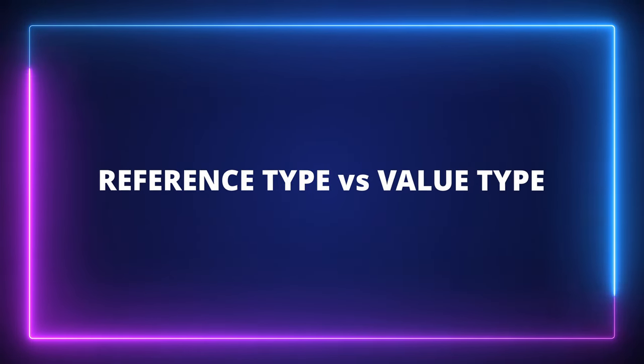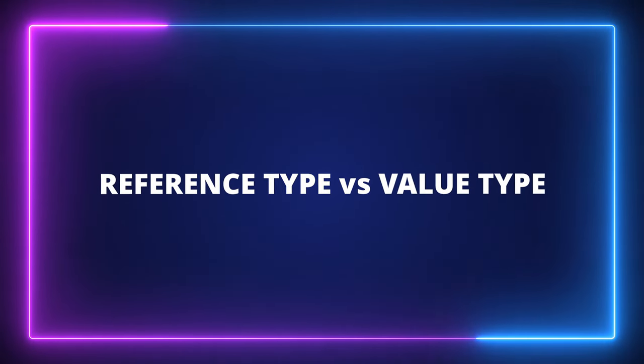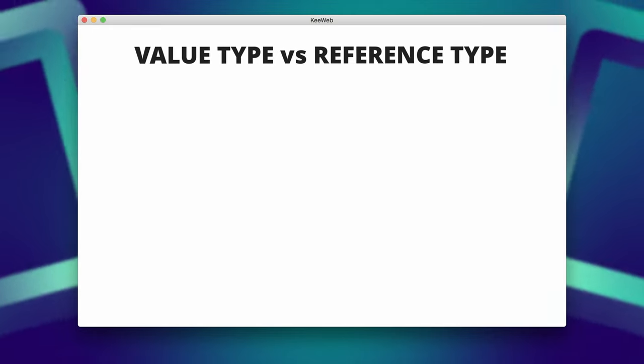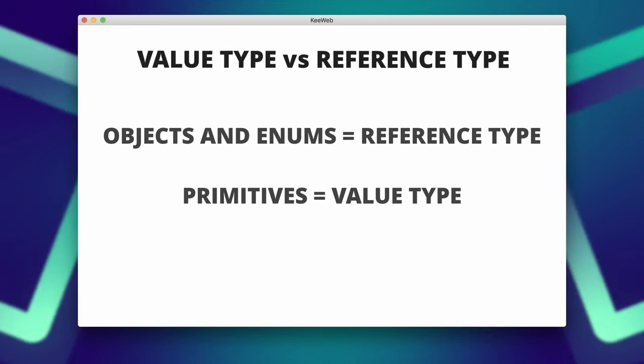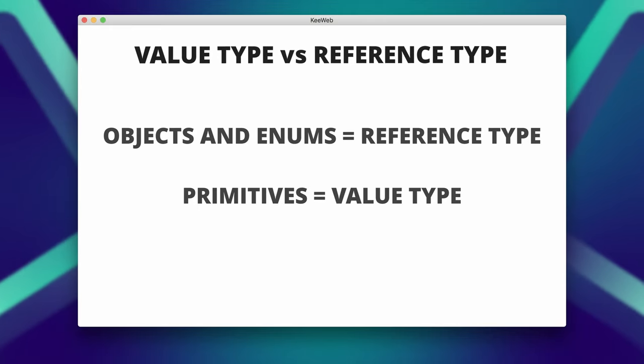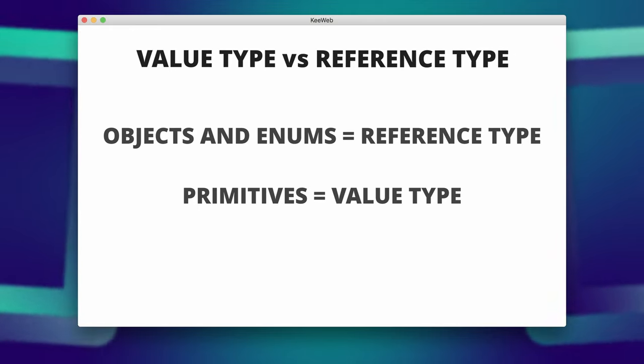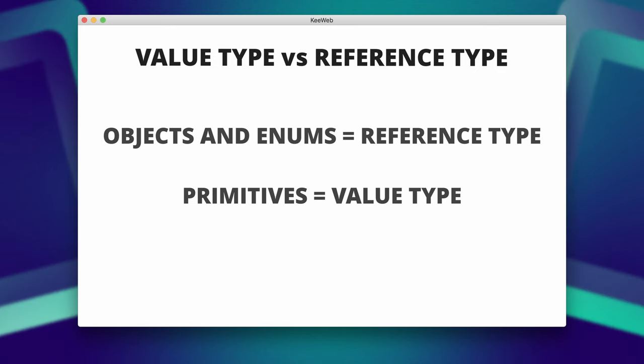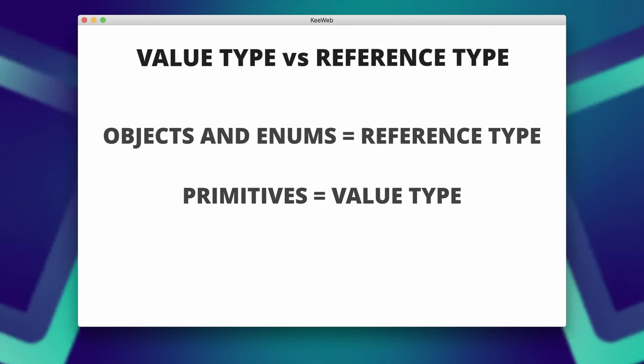What is the difference between a reference type and a value type? In Java, all objects and enums are reference types and all primitives are value types.